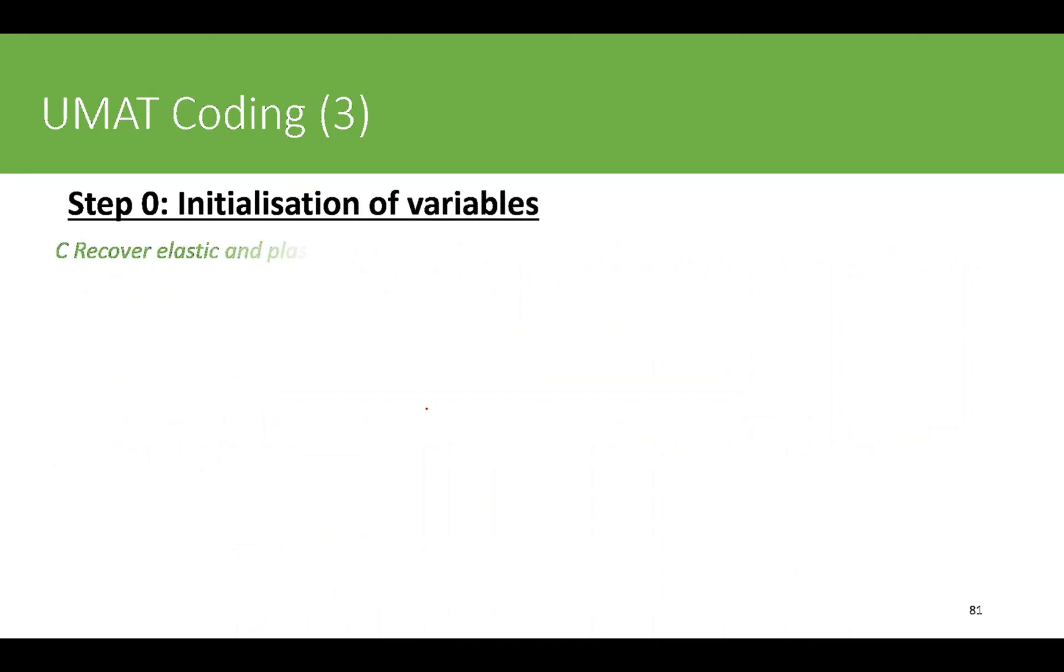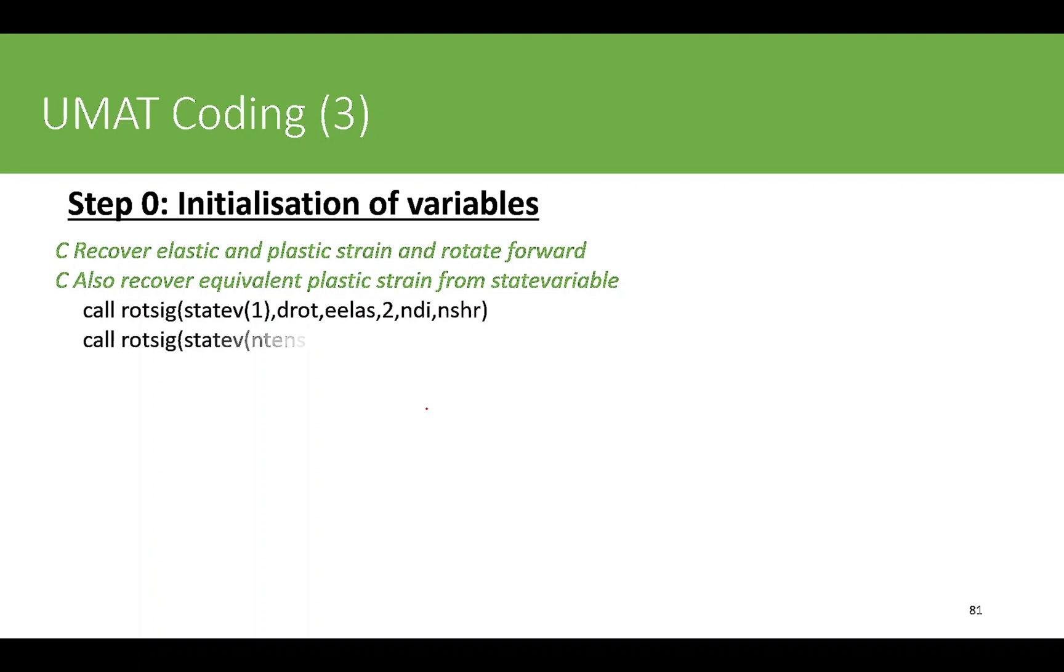Next we initialize other variables. We recover the elastic and plastic strain and rotate forward using rot6. Elastic strains and plastic strains are taken from state variables 1 to 6 and 7 to 12, and then rotated forward using rot6 subroutine to account for finite deformation. Similarly, equivalent plastic strain is state variable 13.